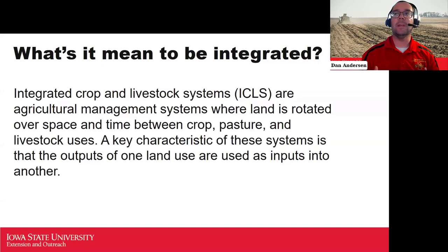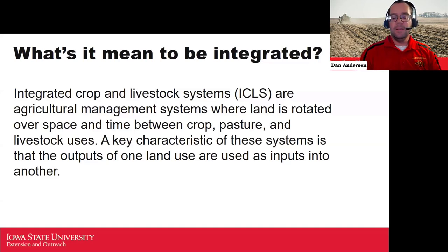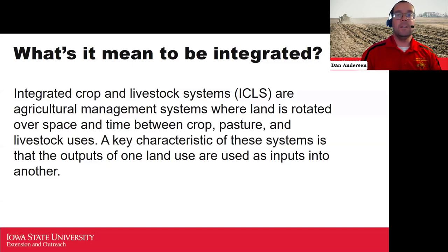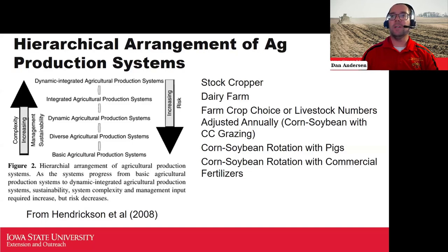A definition I found that was really helpful was to think about agricultural management systems where the land is rotated over either space or time between crop, pasture, and livestock uses — or at least a couple of those. The land use had to vary, so putting manure onto a crop field is integrating it for livestock use, or grazing that corn stover.